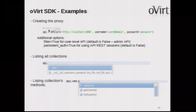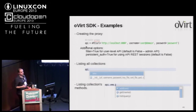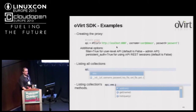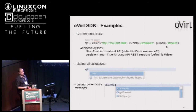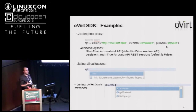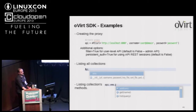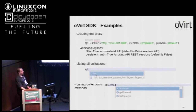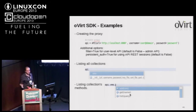In Python, to start working with the engine, you create a proxy — a new API object — passing the URL, username, and password. Then you have an object you can use. For example, listing all collections: api.vms gives you the VMs collection, and you can do api.vms.add, api.vms.get, or list all VMs. Very convenient to use.